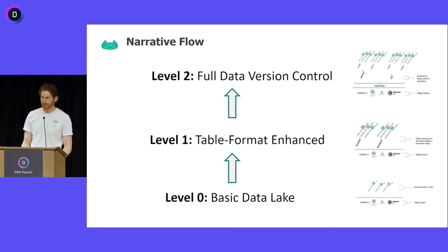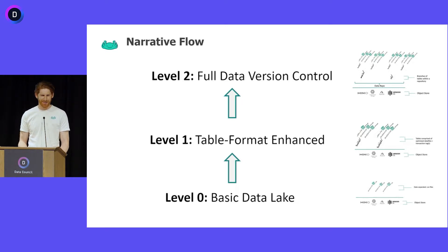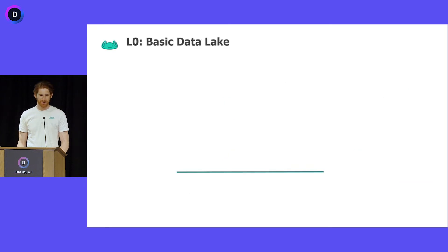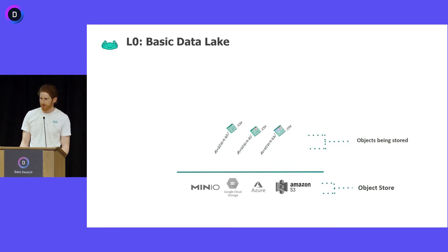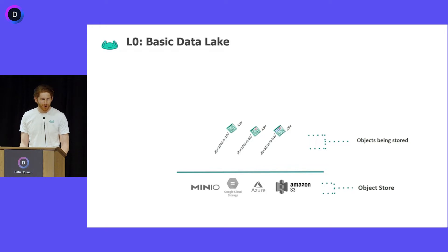We will start from the bottom and work our way up to the top. A data lake is primarily two things: an object store and the objects being stored. Your main object stores are the main cloud provider services like Amazon S3, Azure Blob, and Google Cloud Storage, as well as interesting open source solutions like the now $1 billion valued min.io and a couple other options.